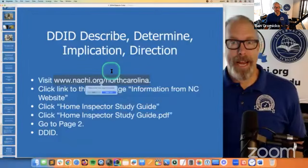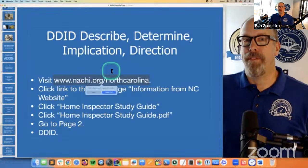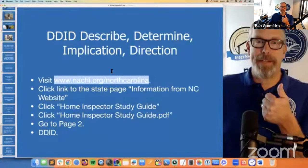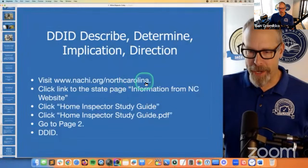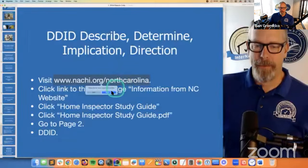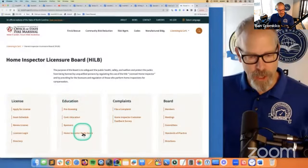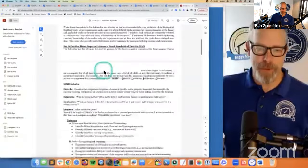Go to nachi.org/NorthCarolina — I believe DDID is unique to North Carolina. Texas is the most restrictive — it tells you exactly what to write, how to write it, even the format and look of the report is the same with every inspector there. Go to nachi.org/NorthCarolina, click information from North Carolina, click the home inspector study guide, then click the PDF, and go to page 2 — that's where DDID is described by the state licensing board.